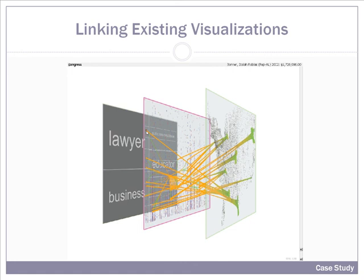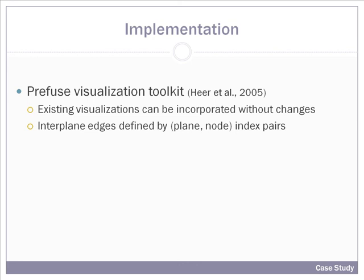These visualizations came with the Prefuse Visualization Toolkit and were imported without any changes. VisLink has been implemented using the Prefuse Visualization Toolkit, in which existing visualizations can be incorporated without changes. Interplane edges are simply defined by setting plane and node index pairs. This is augmented with a Java OpenGL toolkit for rendering in the 3D space.